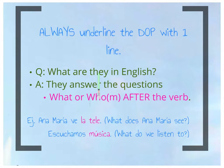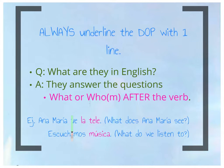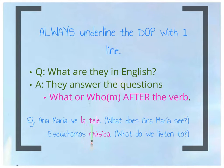What are DOPs in English? They answer two questions — what or whom — after the verb. For example, 'Ana Maria ve la tele.' Ve is our verb right here. 'La tele' — Ana Maria watches the TV. What does Ana Maria watch? The TV. So it answers 'what?' — la tele.